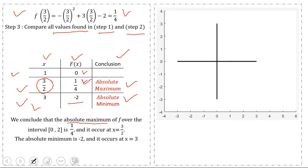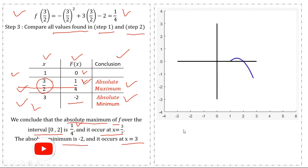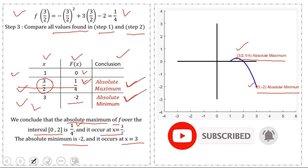We conclude that the absolute maximum of the function over the interval [1, 3] is 1/4, occurring at x = 3/2, and the absolute minimum is -2, occurring at x = 3. We can verify this with the graph of the given function: at one point we have the absolute maximum and at another point we have the absolute minimum. The absolute maximum is the greatest value and the absolute minimum is the smallest value of the function in the given interval.